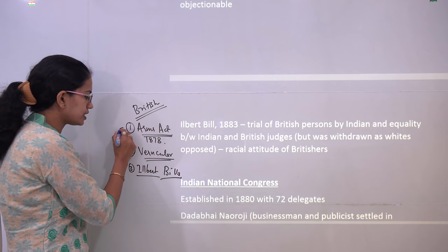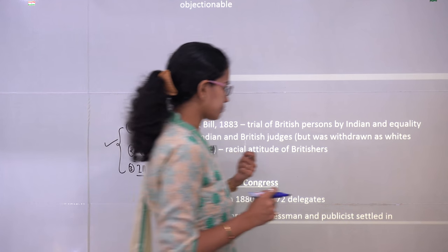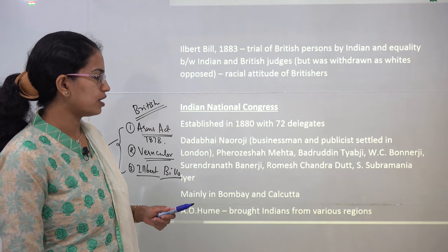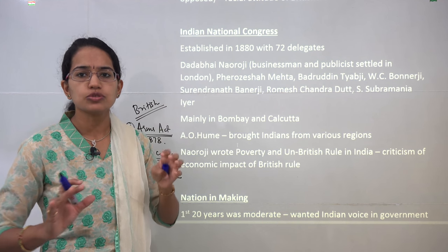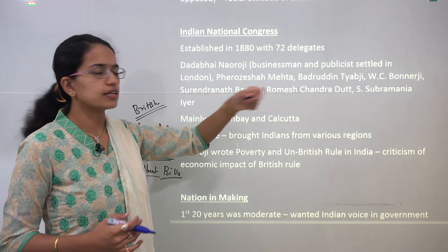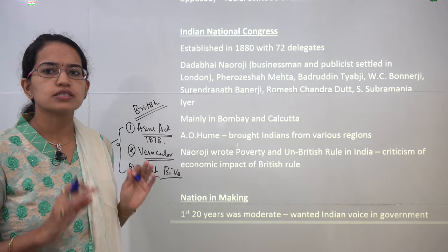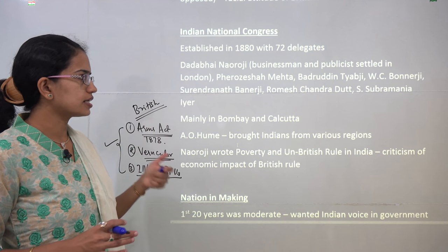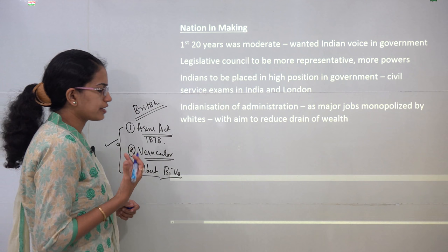All three of these led to very high discontent among Indians and a kind of mass movement started. It started with the formation of the Indian National Congress. When first formed, the INC had 72 delegates. Its leaders included Dadabhai Naoroji, who was a businessman settled in London but had a huge following in India; Feroz Shah Mehta; Badruddin Tyabji; Surendranath Banerjee; and Ramesh Chandra Datt. These were the major founding members. The INC started its functions mainly in Bombay and Calcutta, and A.O. Hume was considered a major leader who brought various Indians from different parts of the country.